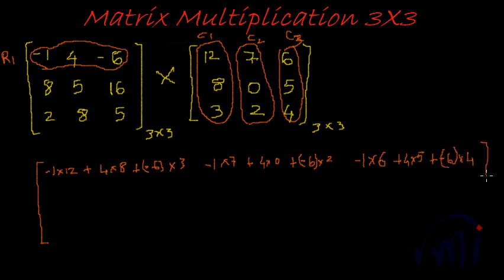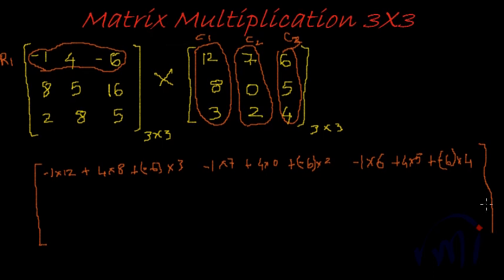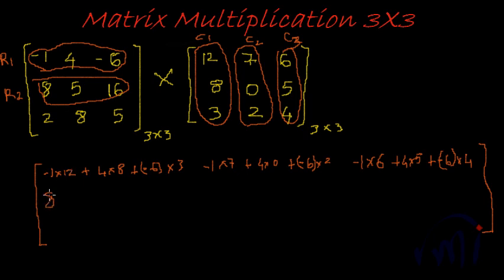So this completes the first row. Now let's find the second row of the product. The second row is arrived at the same way, but this time instead of row 1 we use row 2. The first element of row 2 would be 8 into 12, plus 5 into 8, plus 16 into 3.